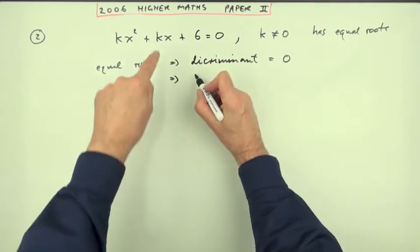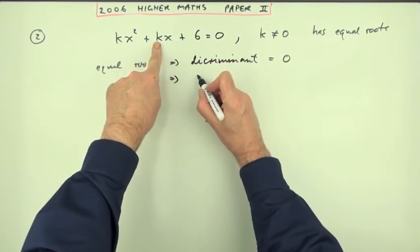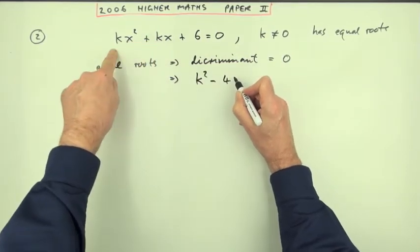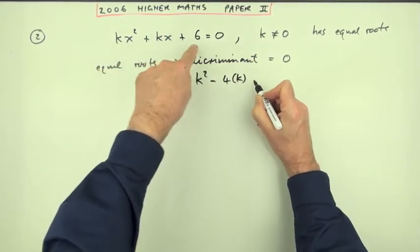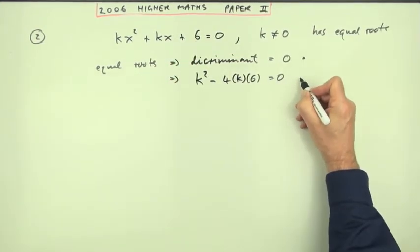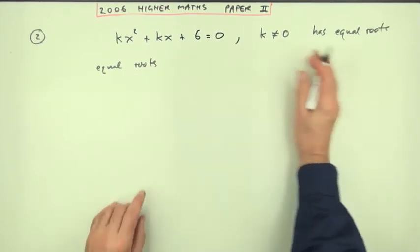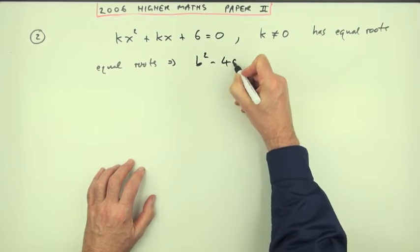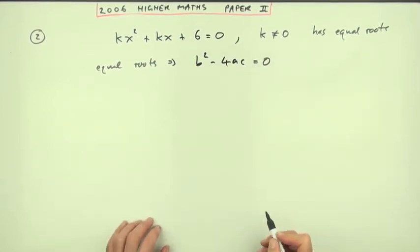That would be this one squared, the middle term squared, that's the b squared, that's k squared minus four times the a times the c. That should equal zero. Those would be the first two marks.